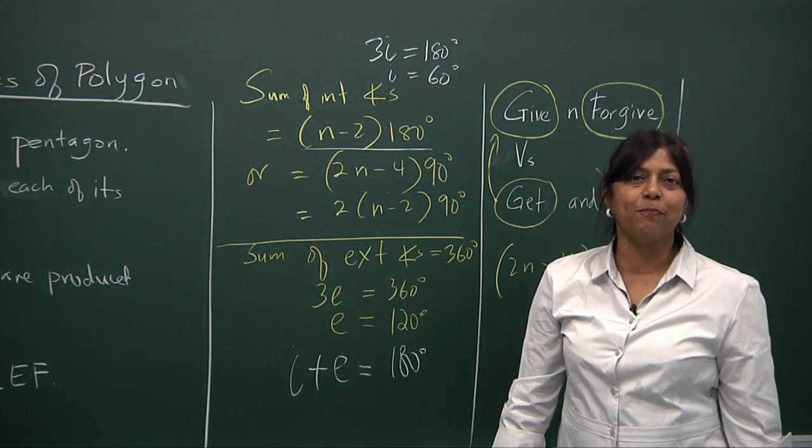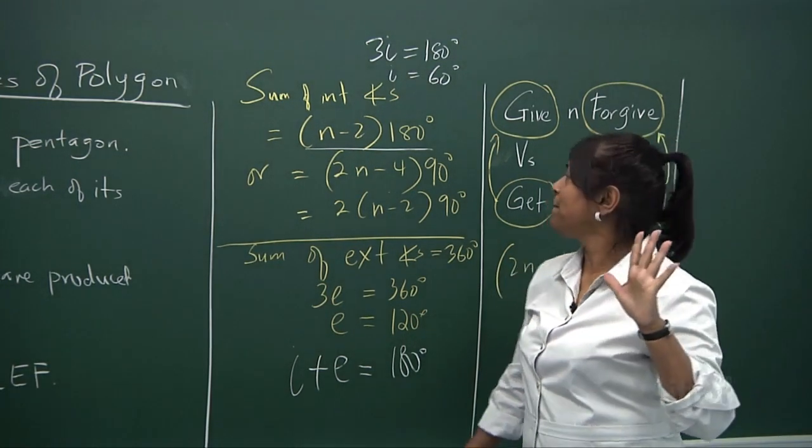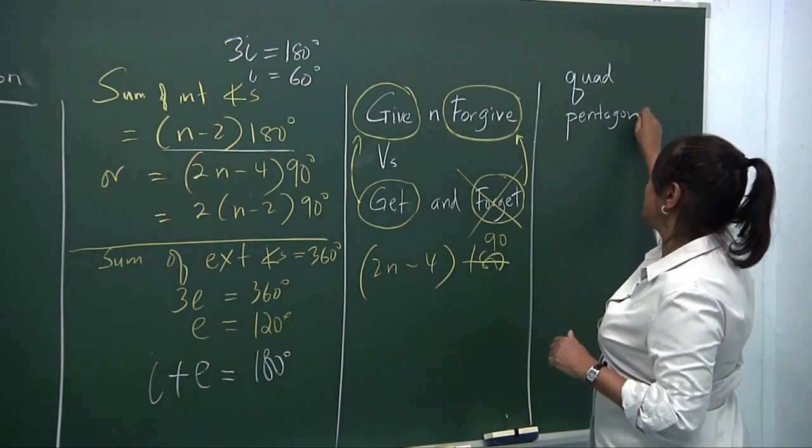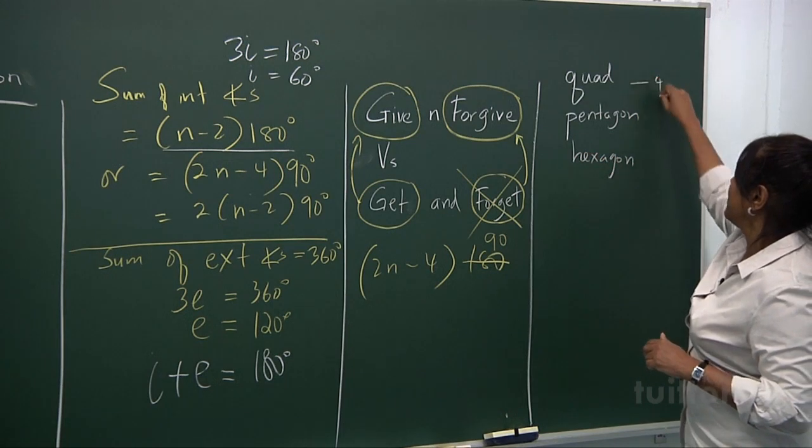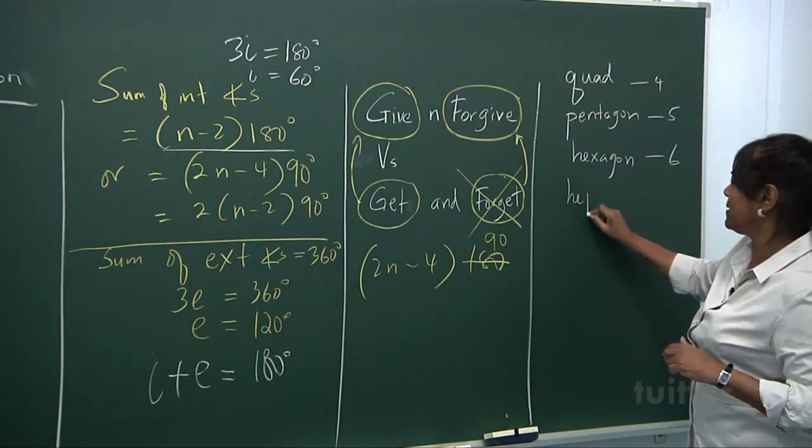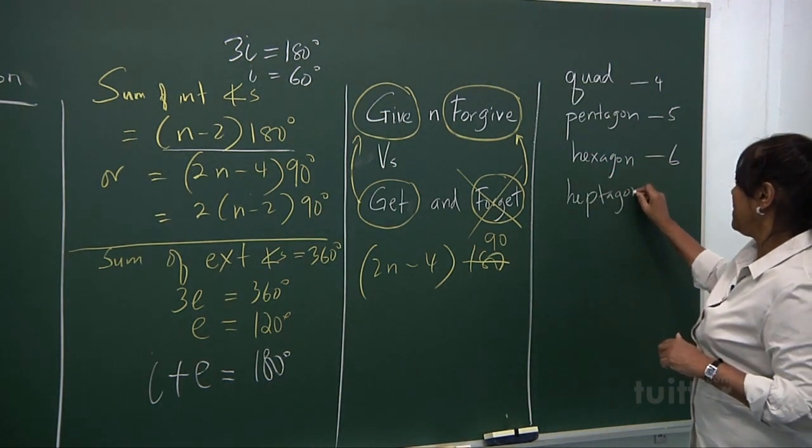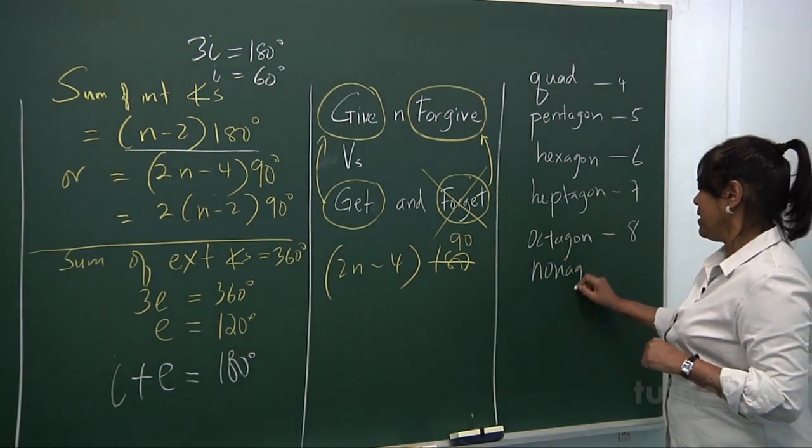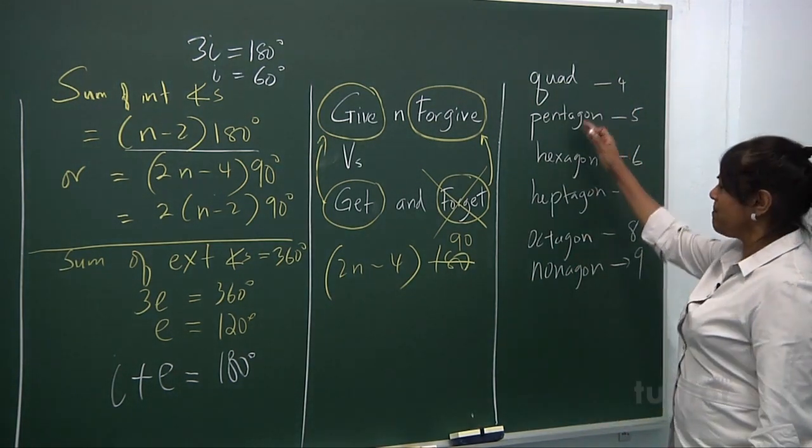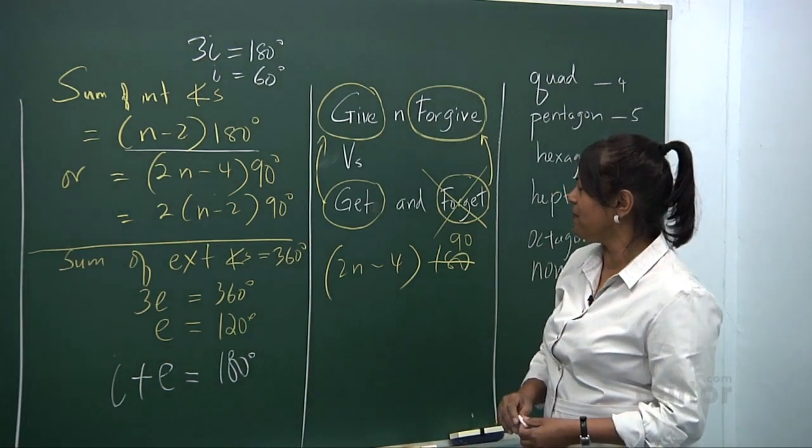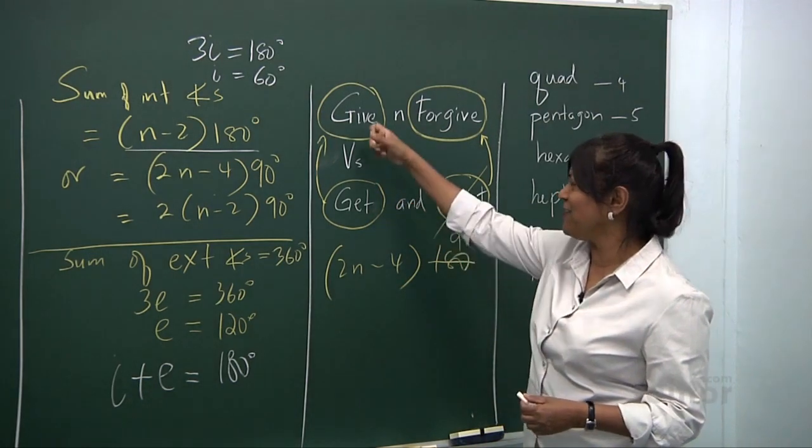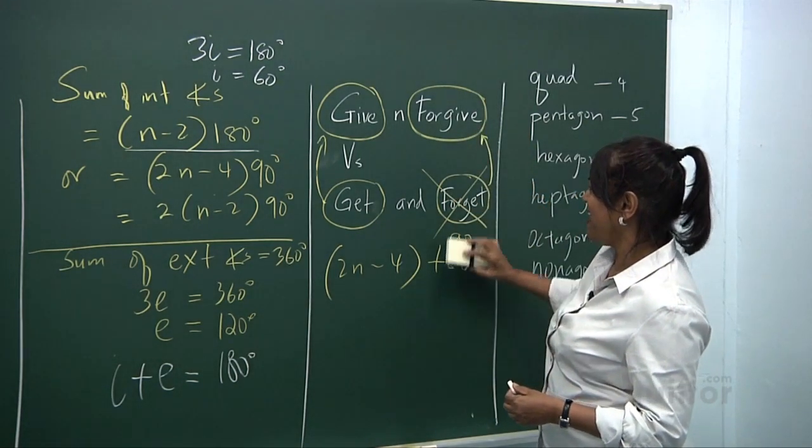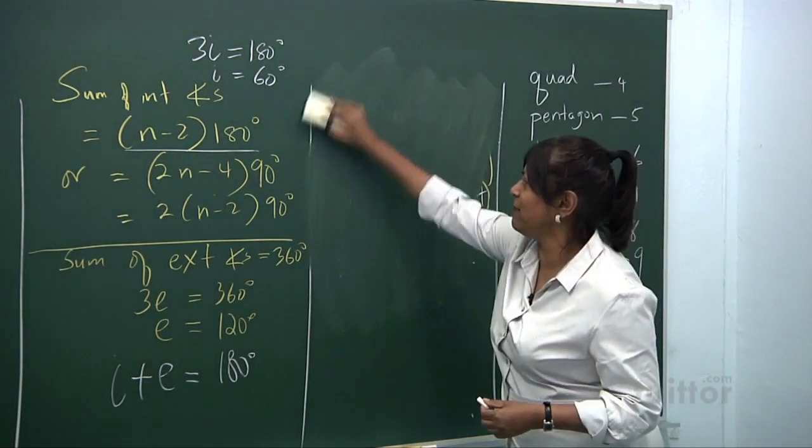When you say the word regular, it means that all the sides are equal, and all the interior angles are equal. And all the exterior angles are equal for that regular polygon. Now, just a quick revision. A 4-sided polygon is called a quadrilateral. 5-sided pentagon. A 6-sided hexagon. And a 7-sided is called a heptagon. And an 8-sided is called an octagon. A 9-sided is called a nonagon. And a 10-sided is called a decagon. So just remember these names roughly for your added information. And never forget what you get. You learn to give back. Remember, give and forgive. As character development, get and never forget. So this is my message to you for character development for today.